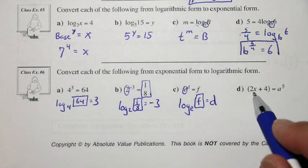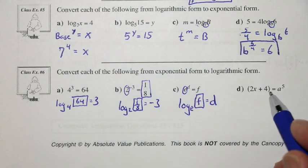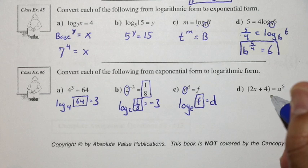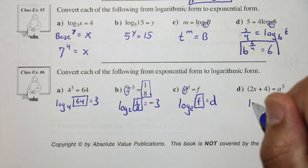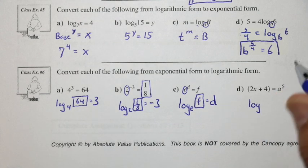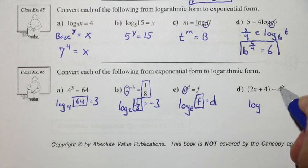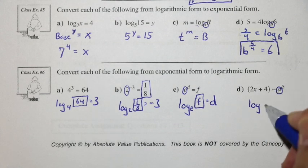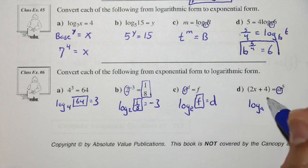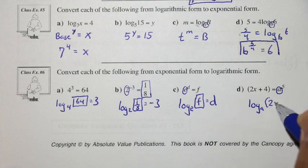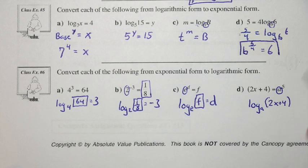Here we have a binomial expression. The base is a, so log base a — putting the result in brackets — of 2x plus 4 is now the argument, and that equals the exponent.